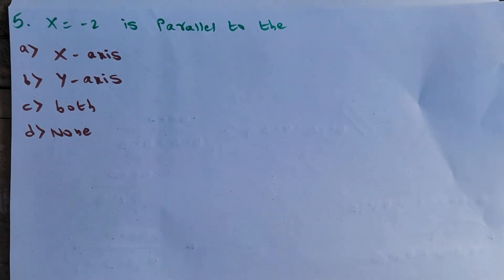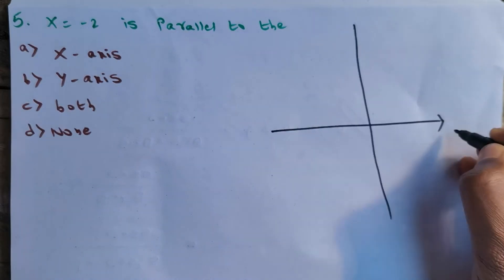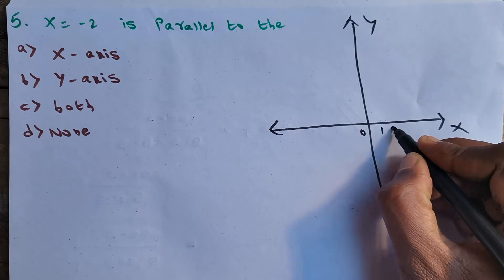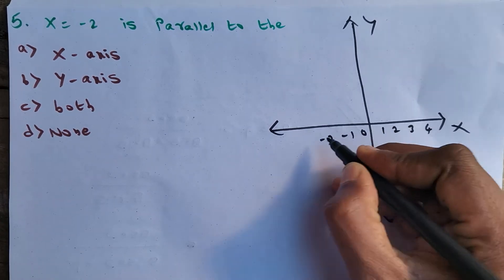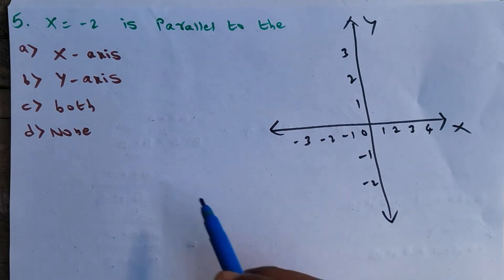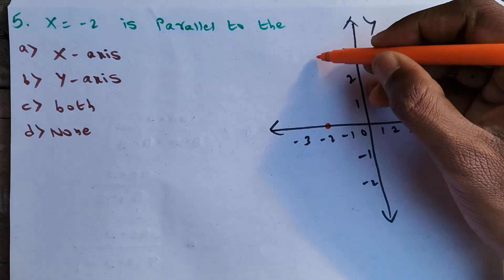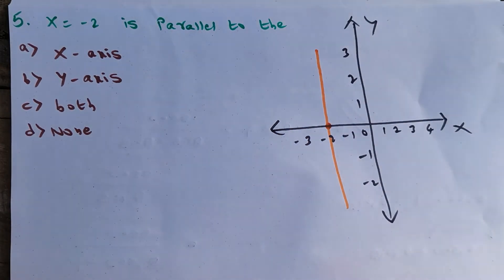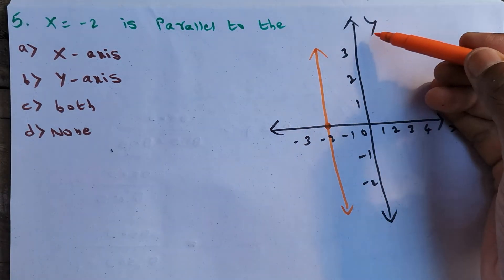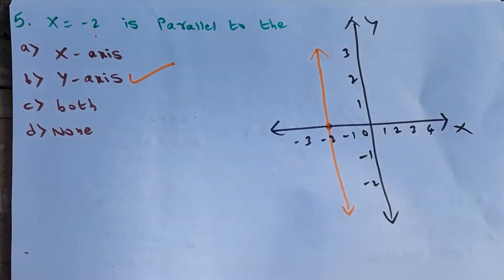Question 5: x = −2 will be parallel to which axis? On the coordinate plane, x = −2 is a vertical line drawn at x = −2 on the x-axis. This line is parallel to the y-axis. So x = −2 is parallel to the y-axis.